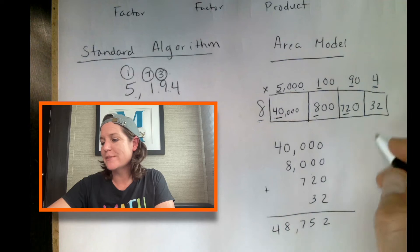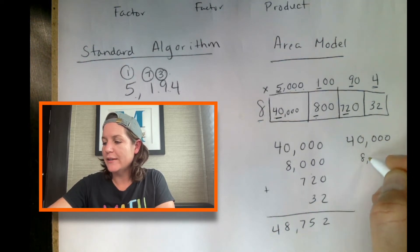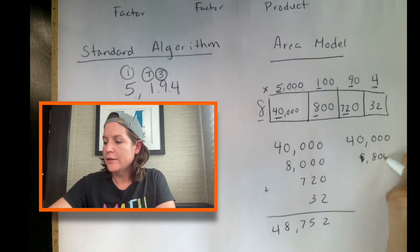8 times 9 is 72. We've got one zero. And we have 8 times 4 is 32 there. Now this is not our answer. Now we have to add them up.